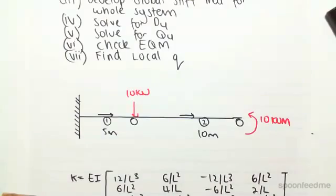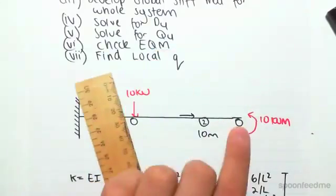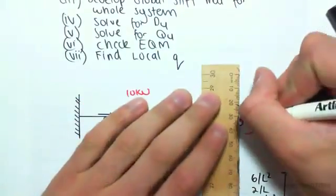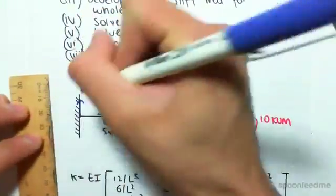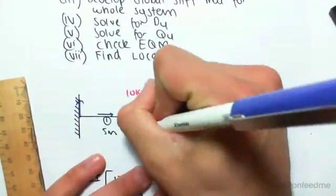But every single support resists vertical. That can resist vertical, that can resist vertical and that can resist vertical. So, let's just first draw in all our degrees of freedom. So, we know we have verticals. I'm going to define my moments going anti-clockwise.